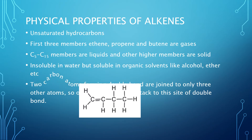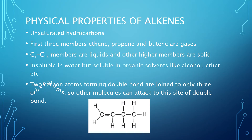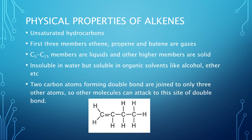The two carbon atoms forming the double bond are joined to only three other atoms. As you have seen in this picture, the first two carbon atoms are joined to three other atoms, and this site is used for attack — so another molecule can easily attack on this site where the double bond is present.